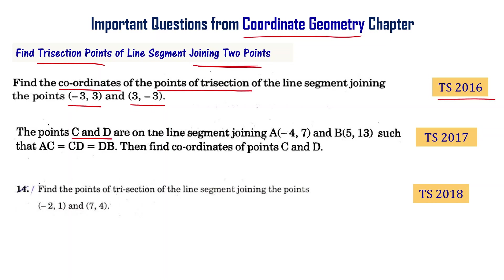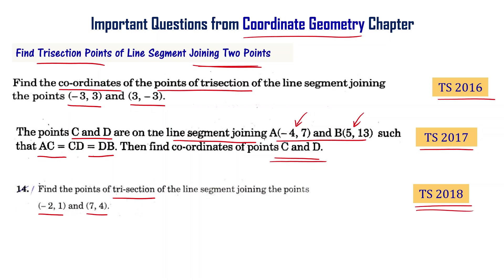The points C and D are on the line segment joining A at minus 4 comma 7 and B at 5 comma 13, such that AC equal to CD equal to DB. Find the coordinates of points C and D — Telangana final exam 2017. Find the points of trisection of the line segment joining minus 2 comma 1 and 7 comma 4 — Telangana final exam 2018. These two questions are essentially the same.